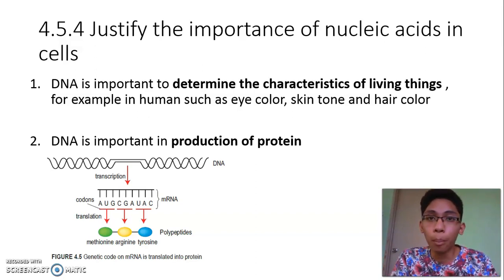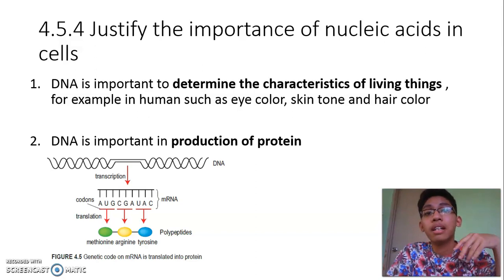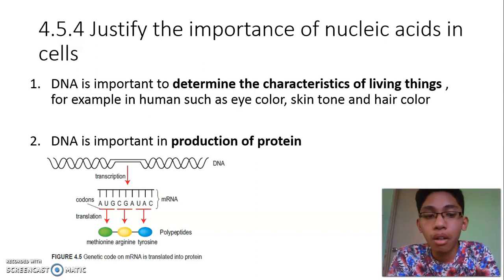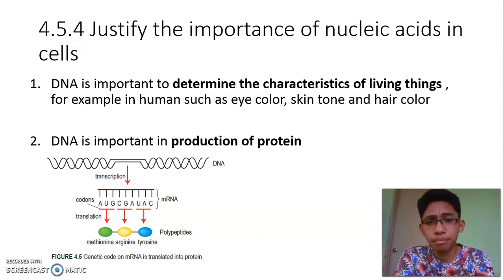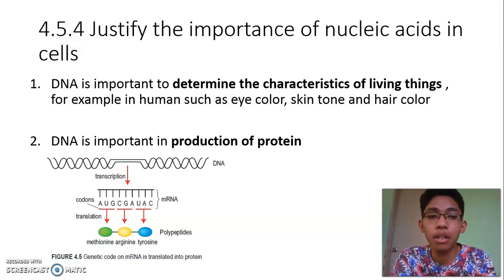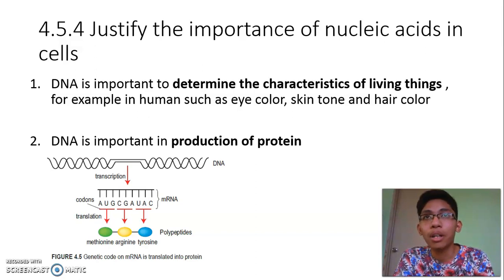DNA is important to determine the characteristics of living things. DNA is like a blueprint that has codes in order to determine what characteristics a living organism will have — such as eye color, skin tone, and hair color in humans and animals. For example, cats have different colors and different kinds of fur.